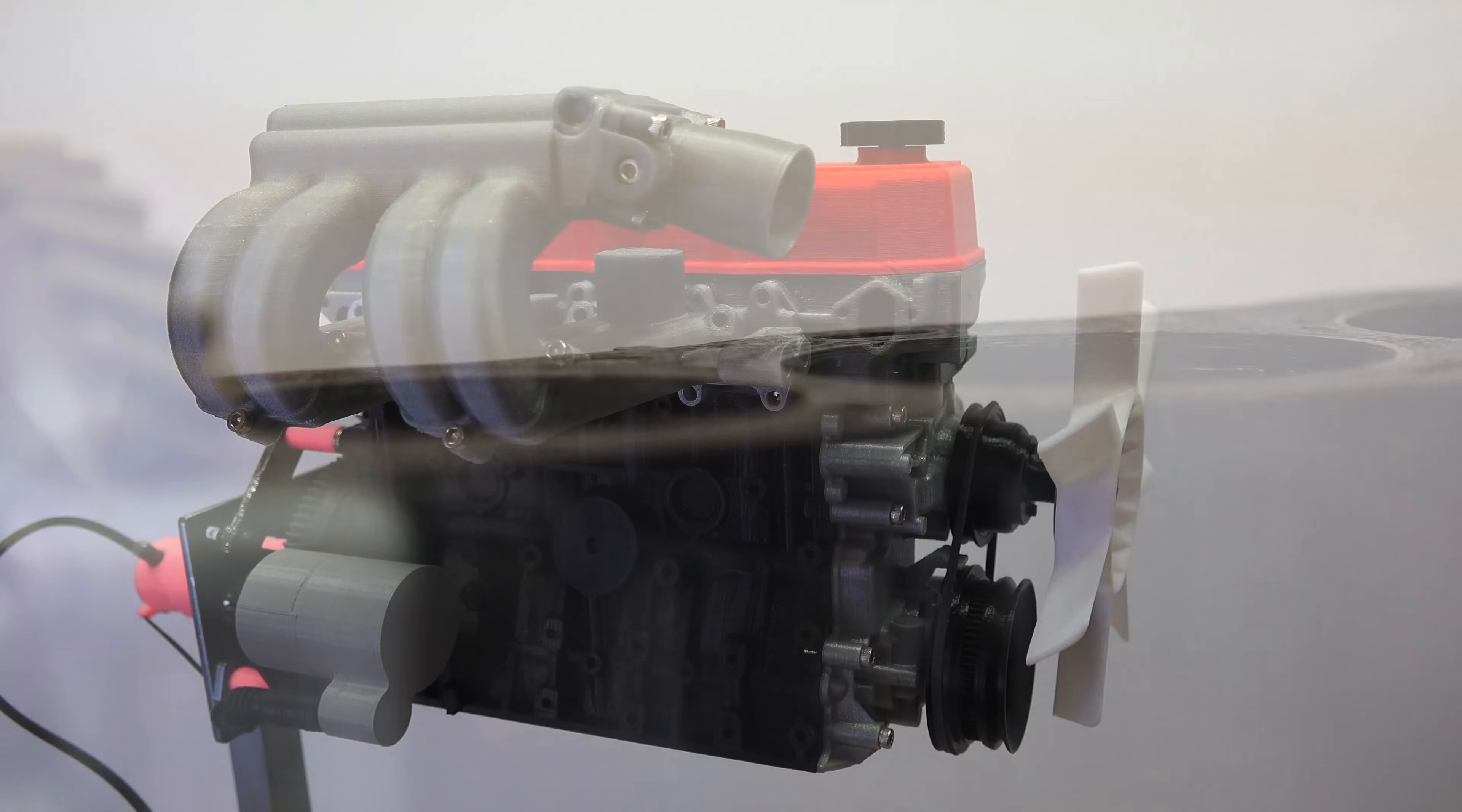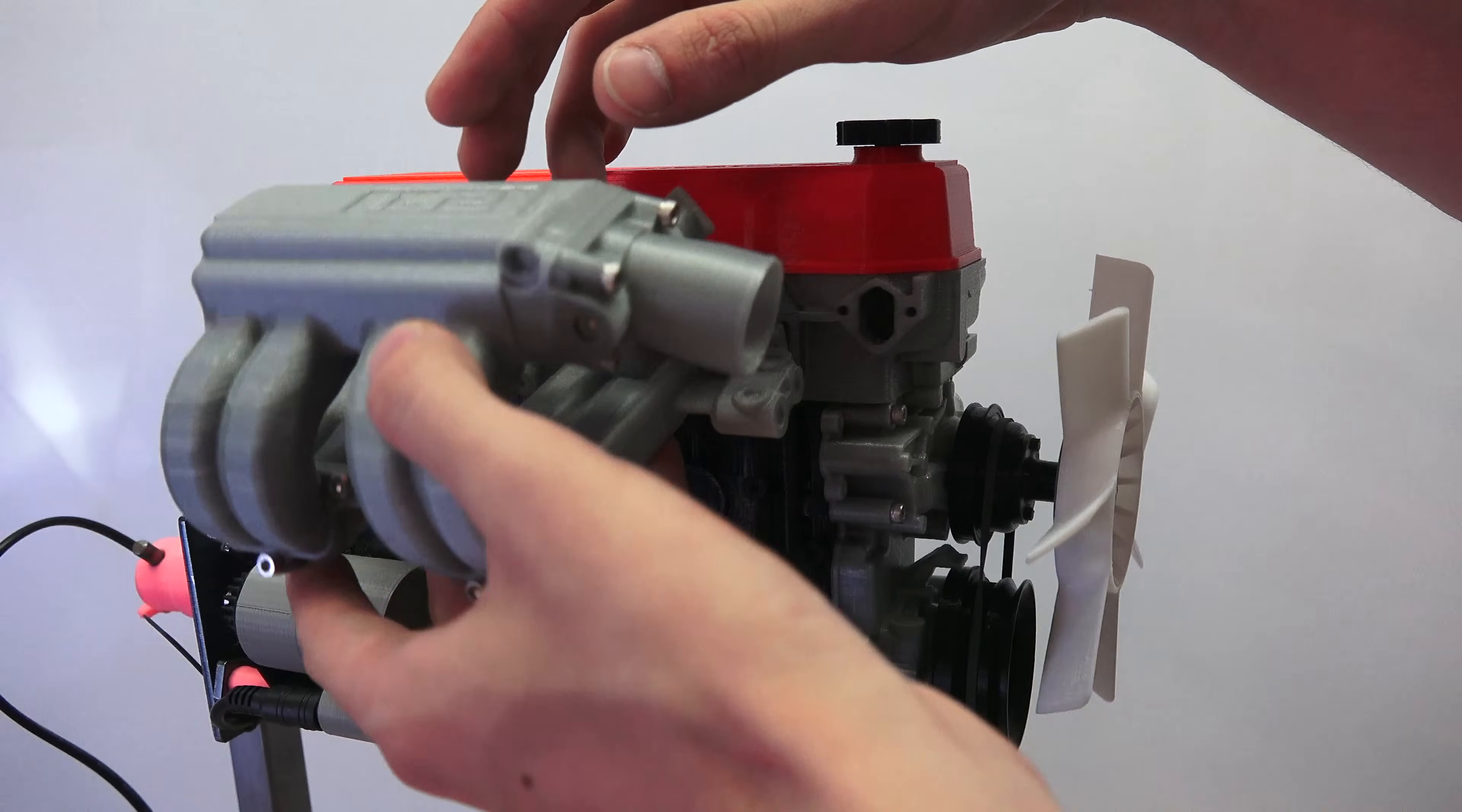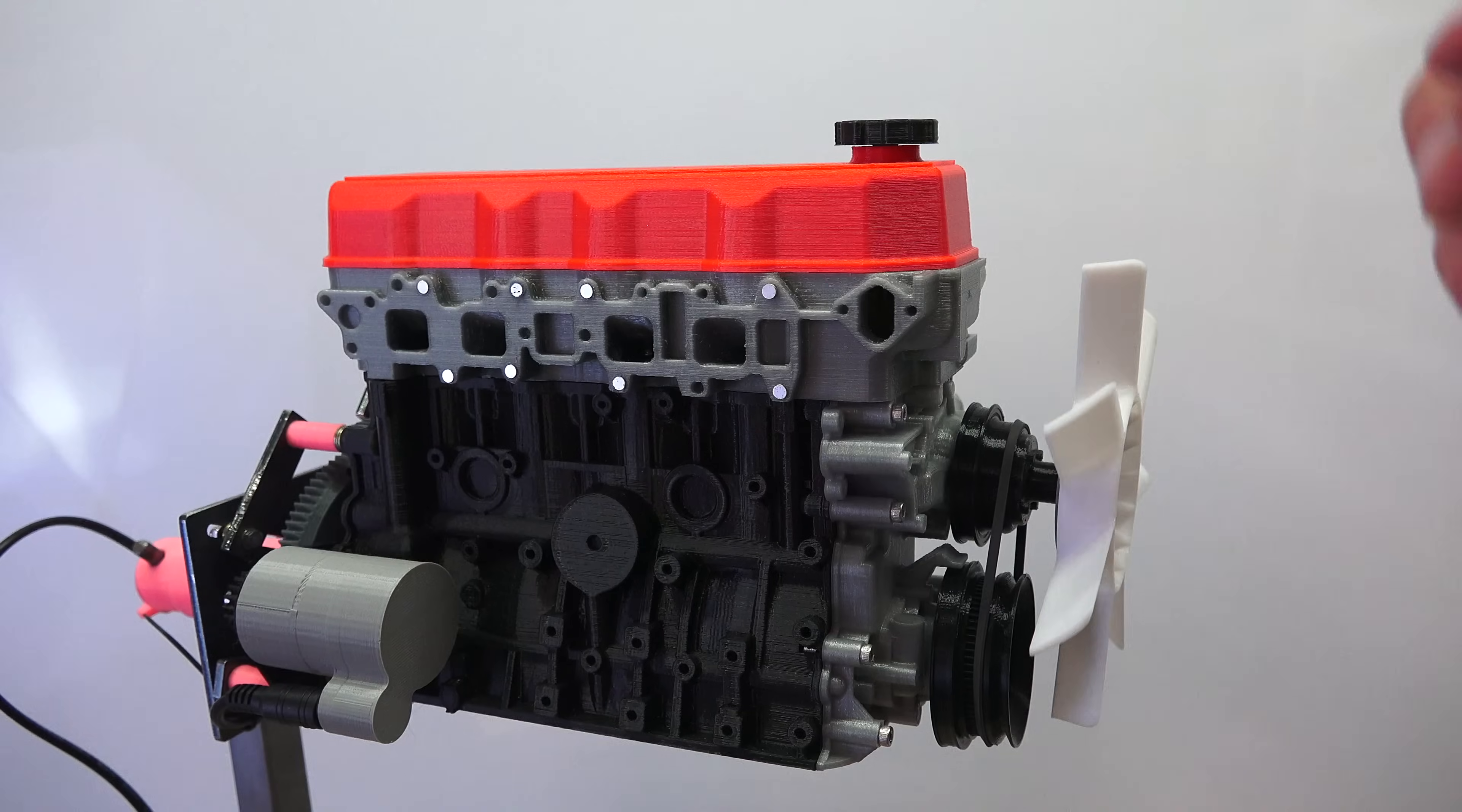Looking at our different components we've got our fan right here which as you can see is belt driven, it's just got a rubber band making that rotate. We've got the intake manifold right here which actually has a functional throttle - you can see that opens and closes. Pretty neat intake manifold there.